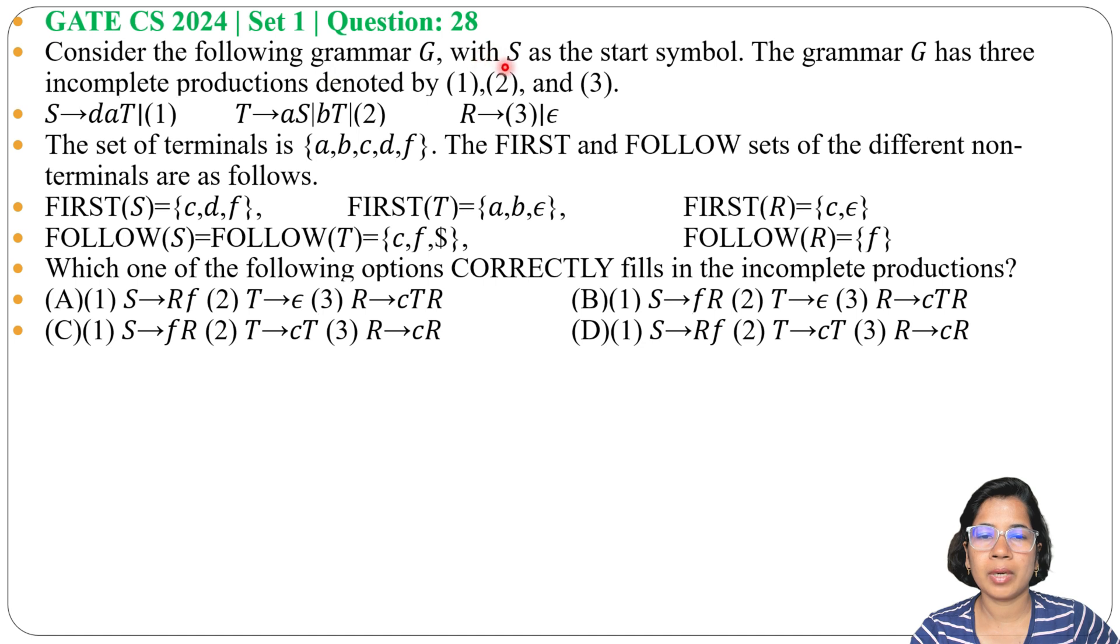Consider the following grammar with S as the start symbol. The grammar G has three incomplete productions denoted by 1, 2, and 3. This is the grammar here - 1, 2, and 3 we need to find.